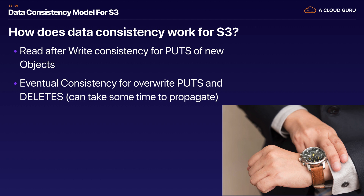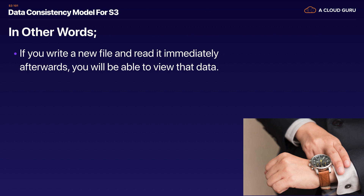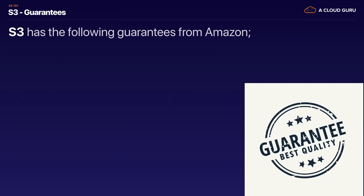In summary: you have read after write consistency for puts of new objects, and eventual consistency for overwrite puts and deletes. If you write a new file and read it immediately, you'll be able to view that data. If you update or delete a file and read it immediately, you may get the older version — changes can take a little bit of time to propagate.